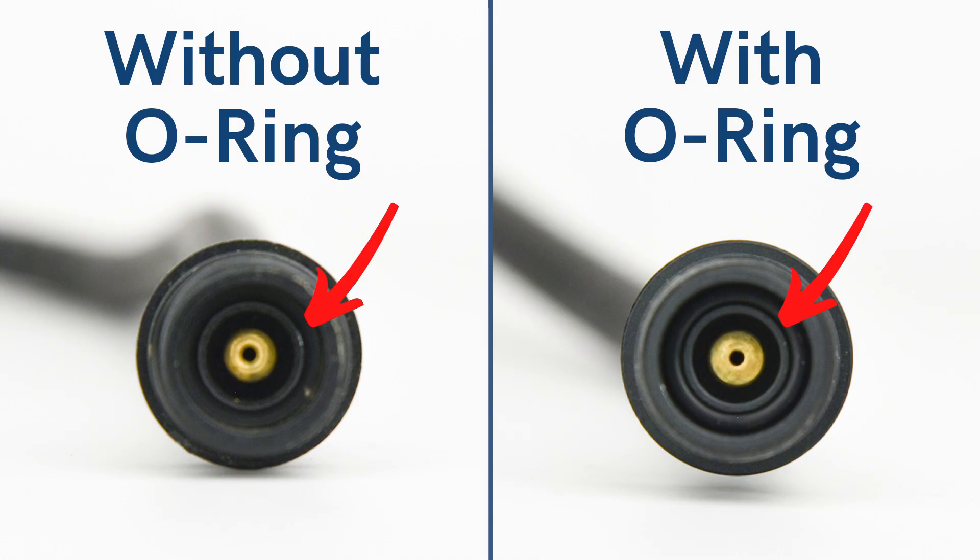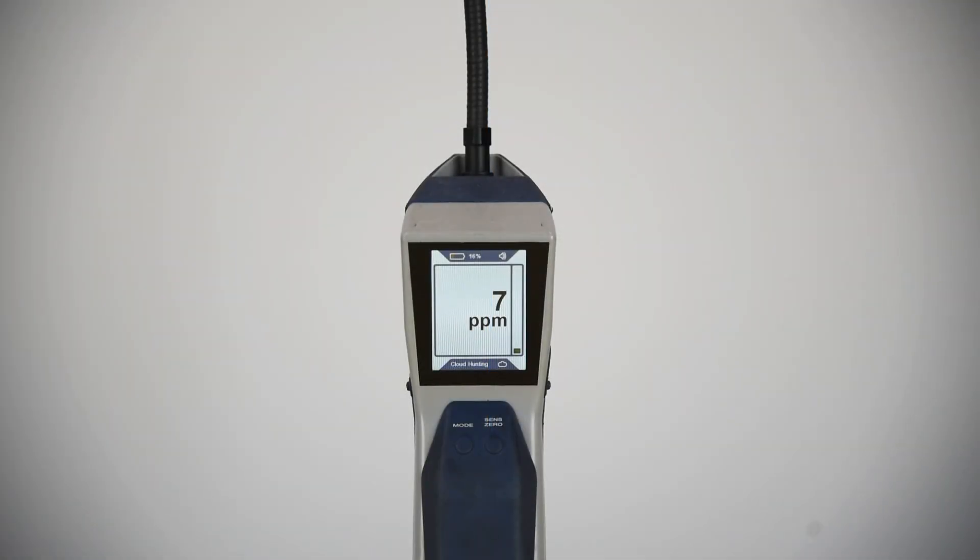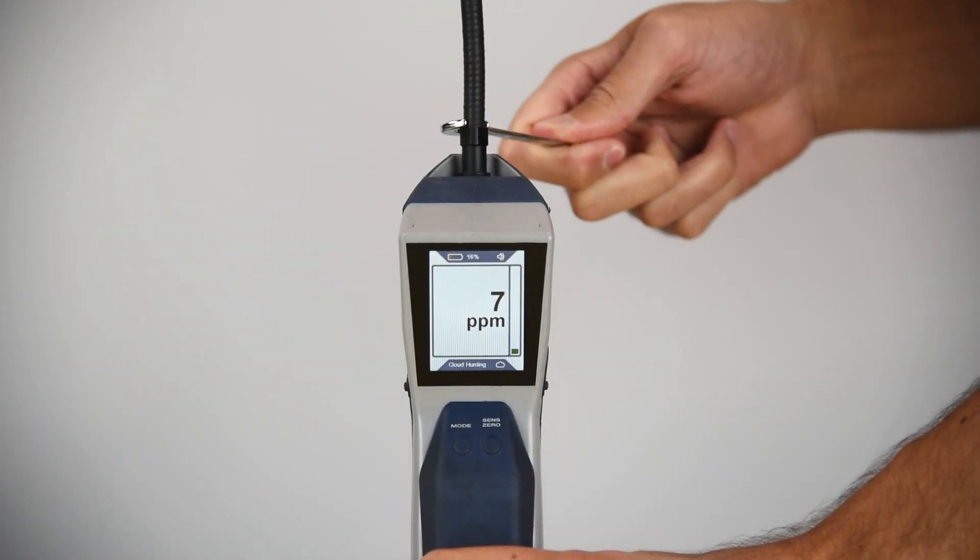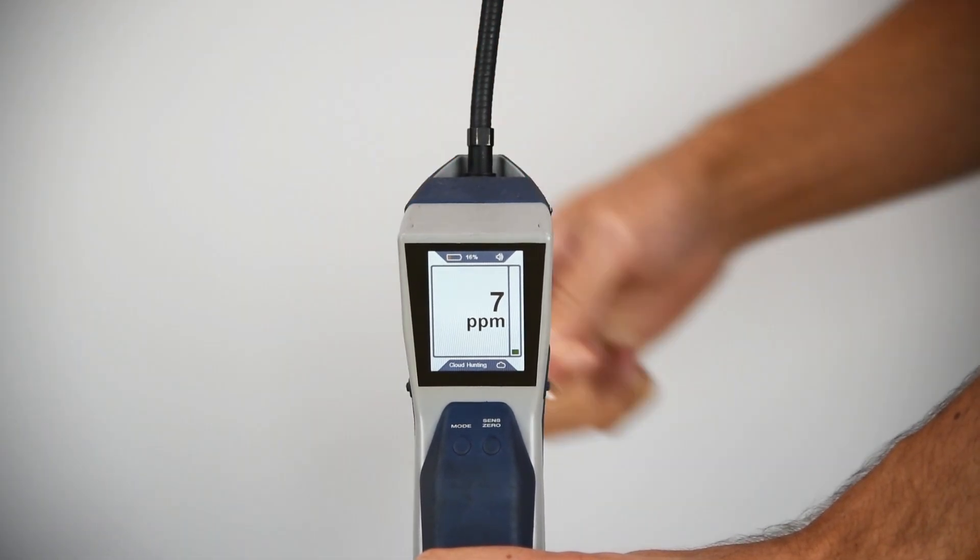Then check if the interior probe o-ring is missing. If it is, replace the part. Next, take the probe off the unit. Removing the probe may resolve the issue, in which case a replacement might be necessary.